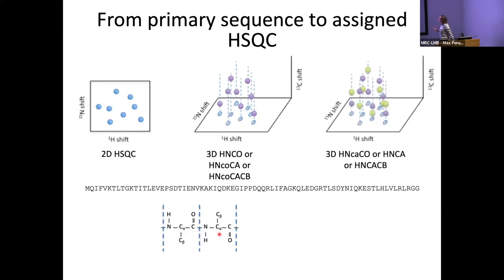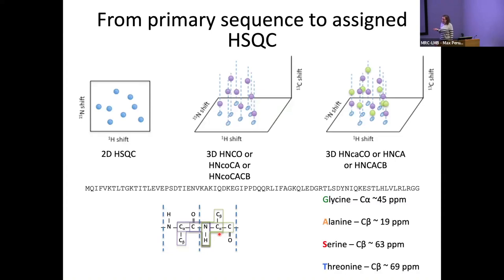The next three experiments — the HNCACB and related — give you both the preceding and the own carbonyl, Cα, and Cβ. Now you've got three carbon resonances for your own 15N peaks and three resonances for the preceding peak, so you can start linking together the information for each peak. Certain amino acid types have specific chemical shift signatures: glycines don't have a backbone Cβ and have a very specific Cα shift; alanine has a very distinct Cβ shift, as do serine and threonine. By matching linked chains of peaks to unique residues in the primary sequence, we can assign individual peaks — for example, saying this peak is from serine 6.